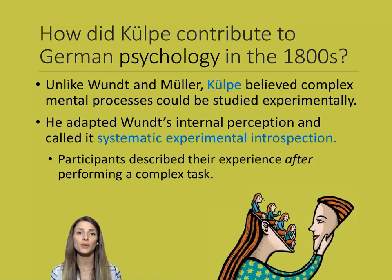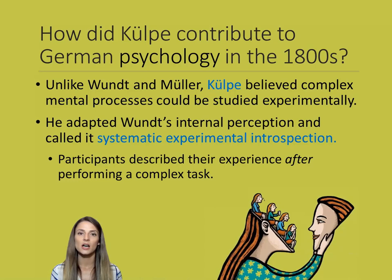Although he studied with Wundt and Muller, he had his own ideas about how the human mind worked. He did not agree that complex mental processes could not be studied by the experimental method. Kolpe believed that complex thoughts, complex processes, even complex behaviors could be studied using the scientific method. So he adapted Wundt's original method of internal perception and called it systematic experimental introspection.